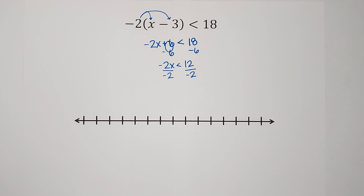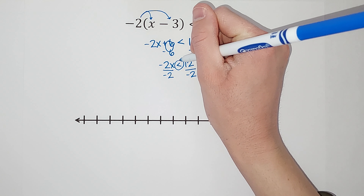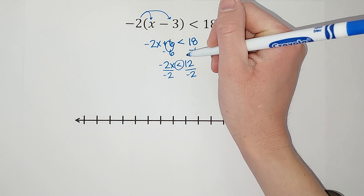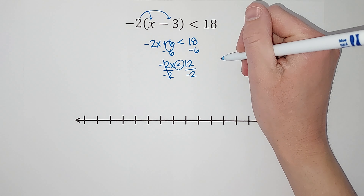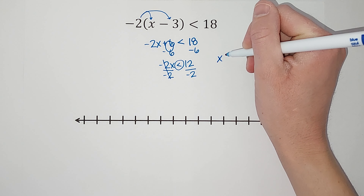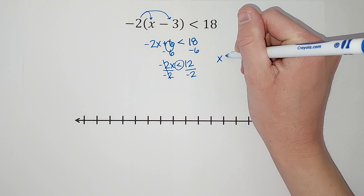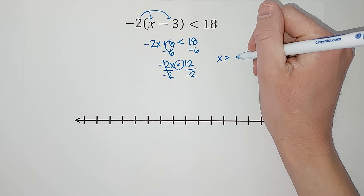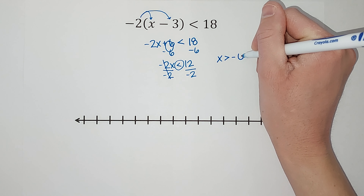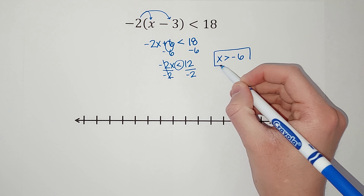Now I am going to divide by negative 2 on both sides, and this is when the alarm bells should go off when you are working with inequalities. Whenever you multiply or divide both sides of an inequality by a negative number, you flip the sign. I like to circle it to help remind me — that's not official math, it's just what I like to do.